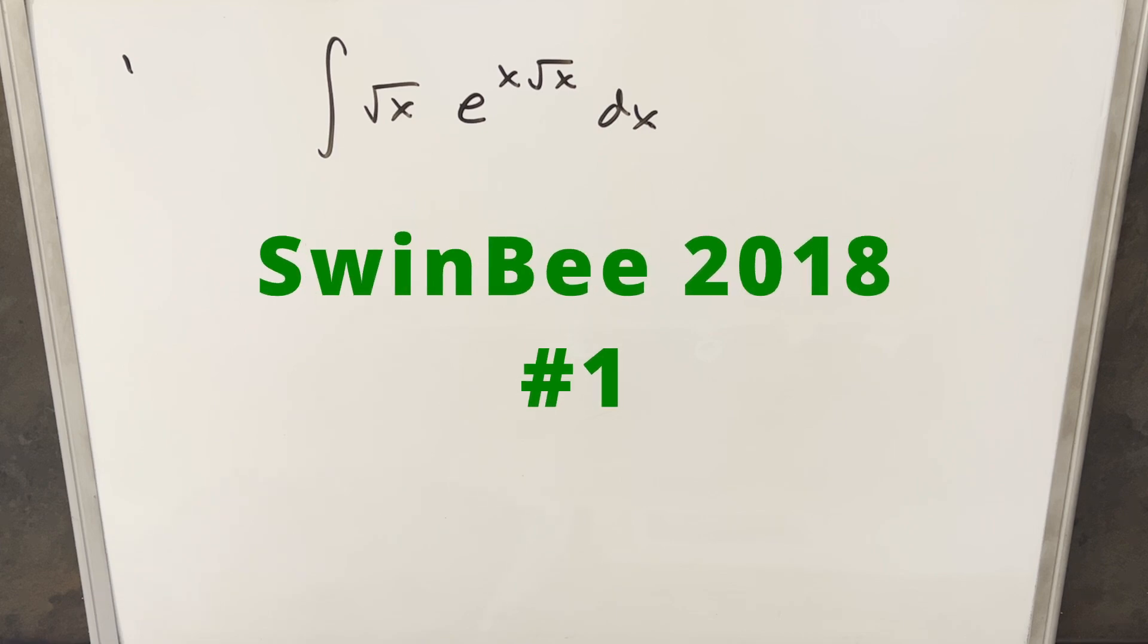Okay, we have here today an integral from the SwinBee 2018. This one's problem number one. We have the integral of the square root of x times e to the x times square root of x dx.